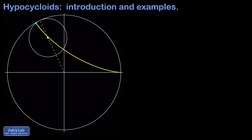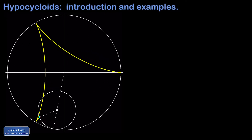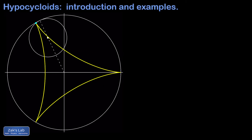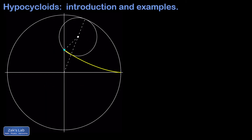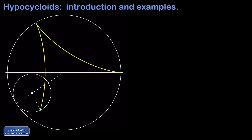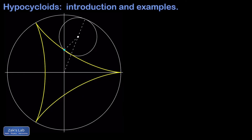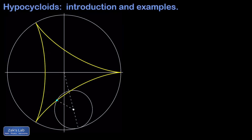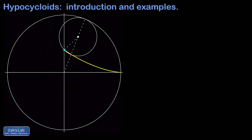In this video we introduce a family of curves called hypocycloids. Our goal is to find the general parametric equations for hypocycloid curves, and then we'll illustrate a couple of examples using animations. As we can see in this introductory animation, a hypocycloid can be formed by a point on a smaller circle rotating within a larger circle.